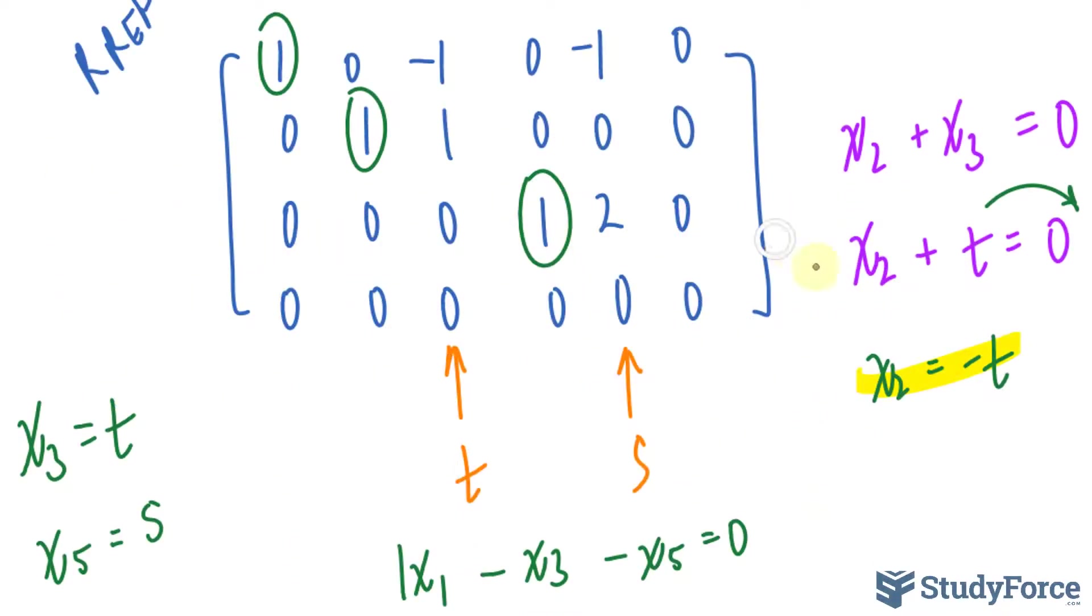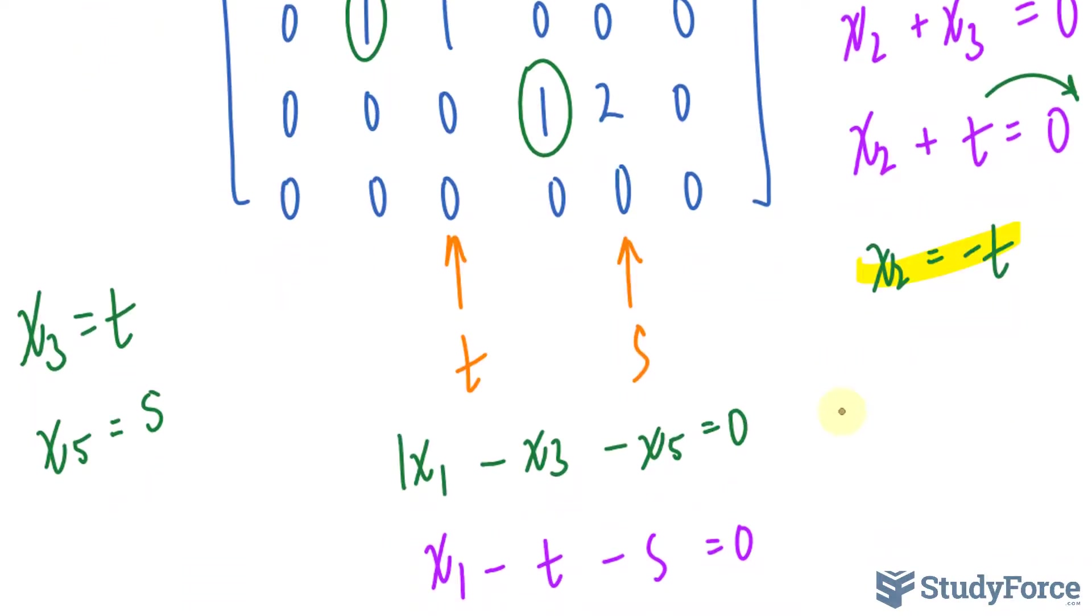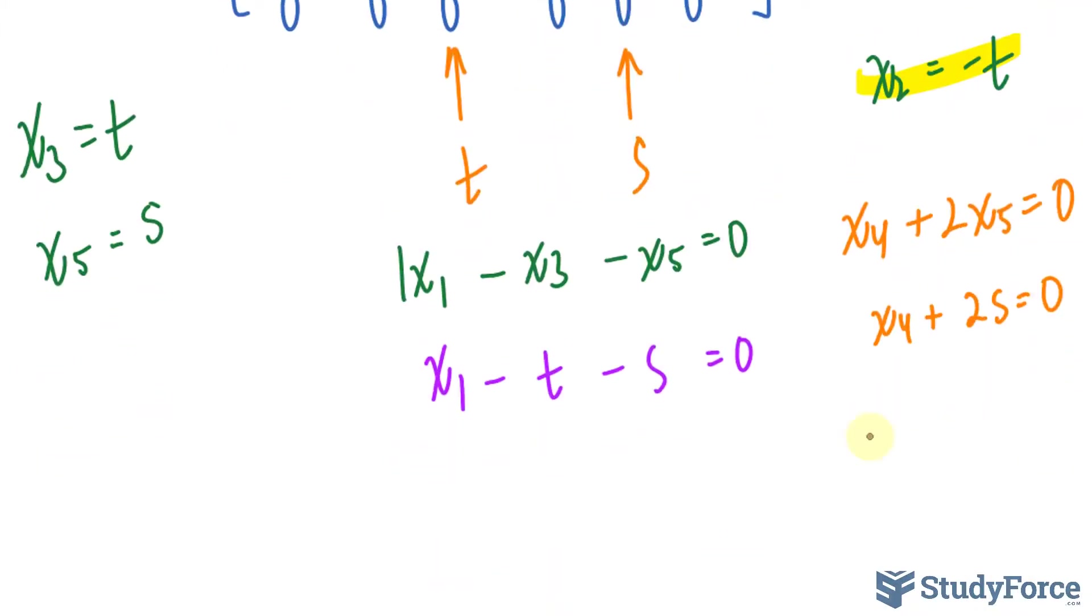For this last row, we write down x sub 4 plus 2 times x sub 5 is equal to 0. x sub 5 we can replace with s. So, we have x sub 4 plus 2 times s is equal to 0. Let's solve for s. We have x sub 4 is equal to minus 2s.